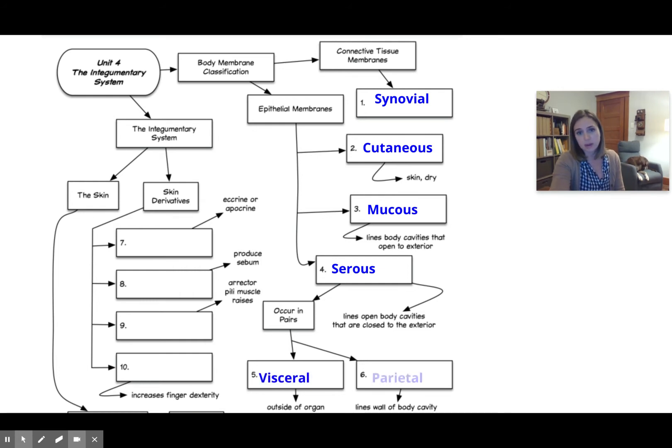So those are our membranes. Moving over to our integumentary system and the derivatives of the skin, these are like our skin appendages or the accessories that we find embedded in the walls of the skin. Our eccrine or apocrine, these are our sweat glands or sudoriferous glands.